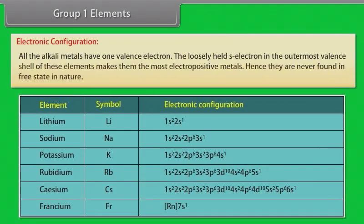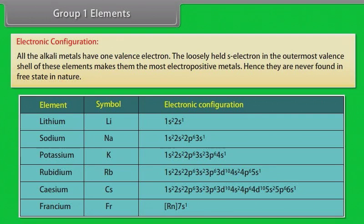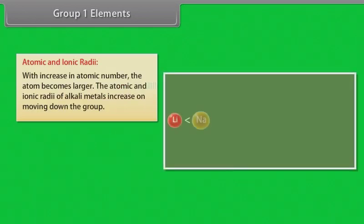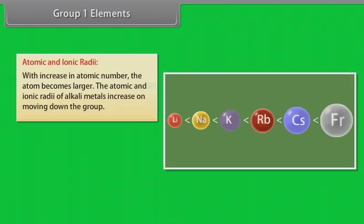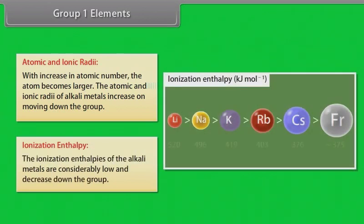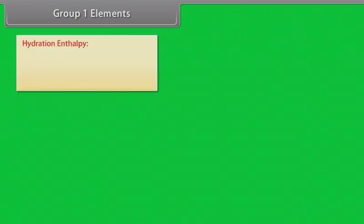Group 1 elements — electronic configuration. All the alkali metals have one valence electron. The loosely held S-electron in the outermost valence shell makes them the most electropositive metals. Hence, they are never found in free state in nature. With increase in atomic number, the atom becomes larger. The atomic and ionic radii of alkali metals increase on moving down the group. The ionization enthalpies of the alkali metals are low and decrease down the group.